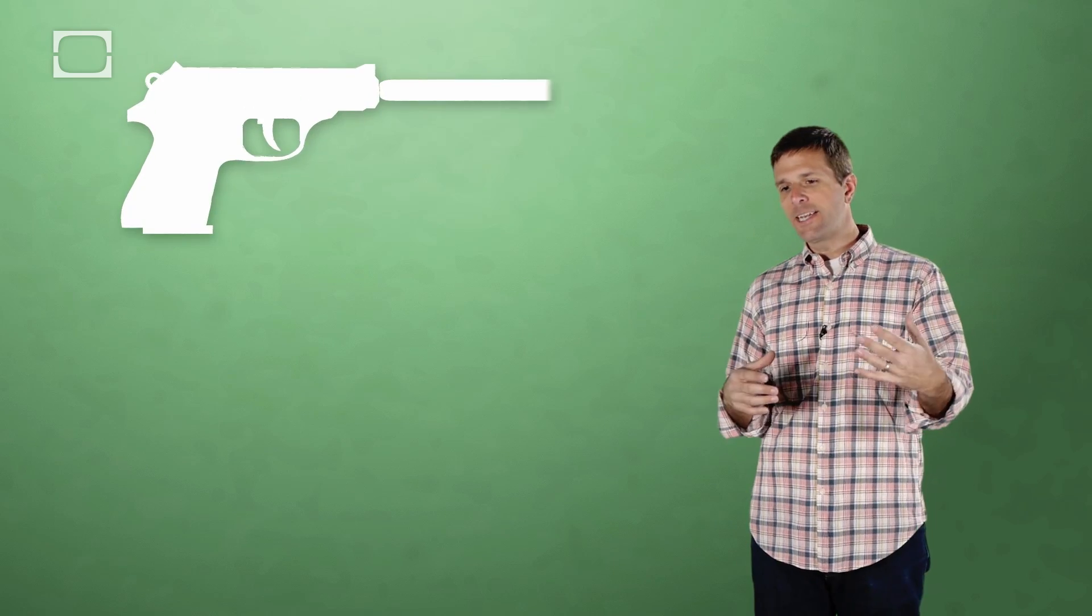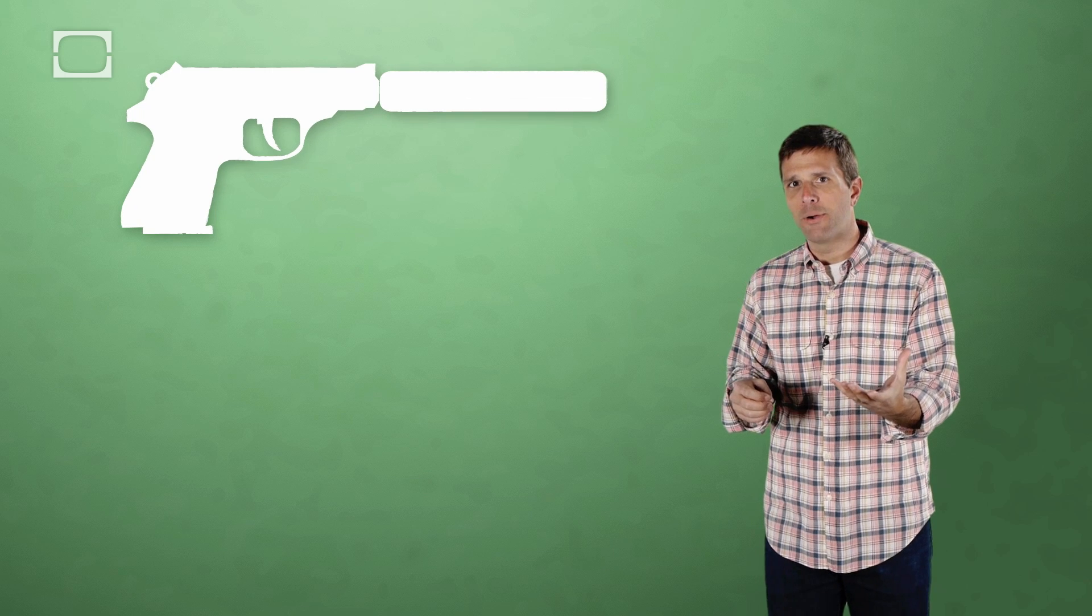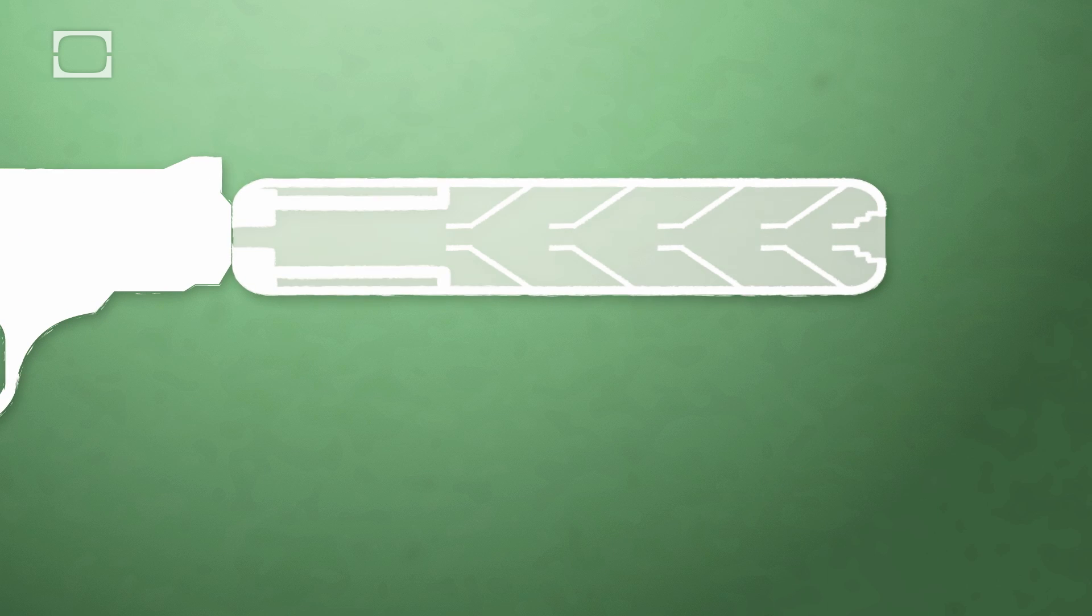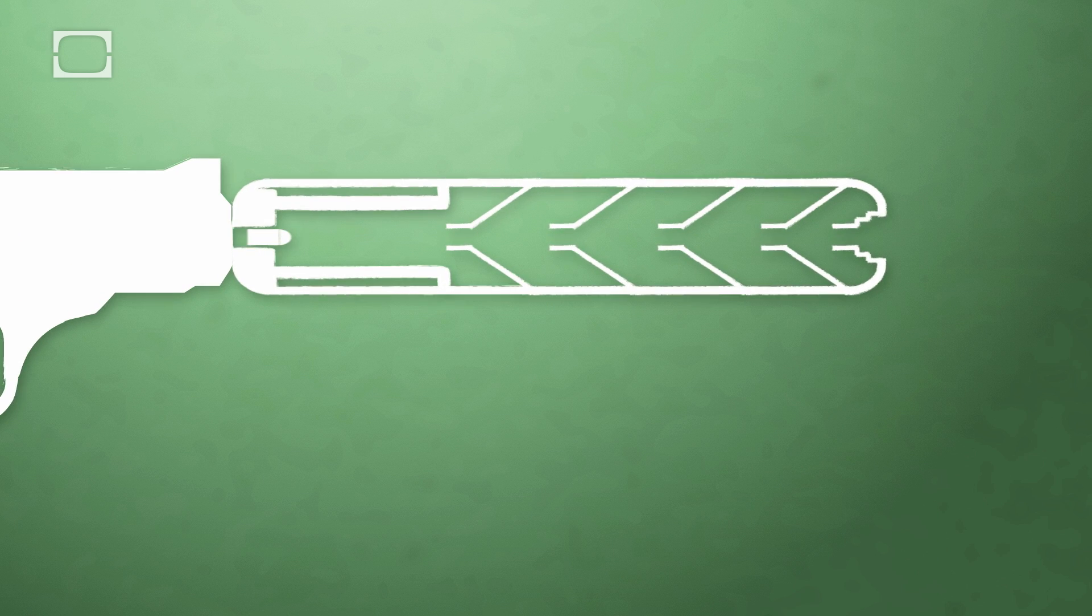They do it by extending the barrel and fattening the barrel. What this does is it takes those gases that are coming out of the gun at three thousand pounds per square inch and gives them room to expand inside the silencer, suppressor,